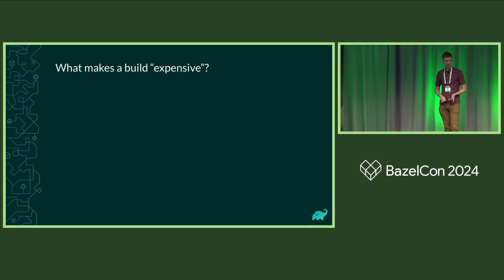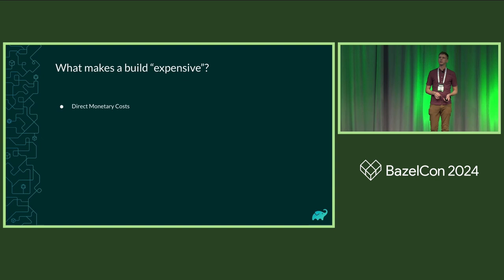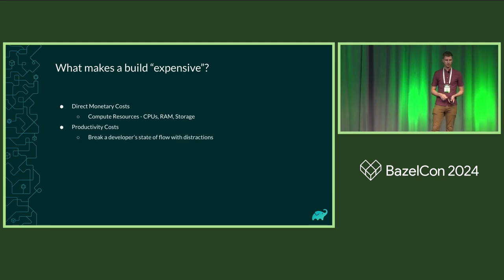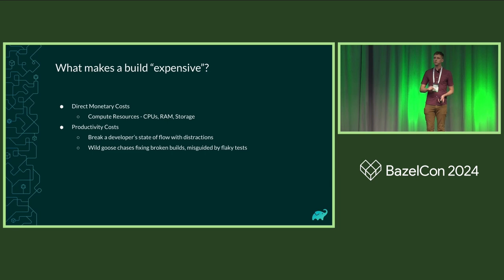Let's talk about what makes a build expensive. There are the direct monetary costs: compute resources, CPU, RAM, memory, your cloud compute. And then there are productivity costs — what happens when a build fails or is not reliable and you break your developer's state of flow with distractions or slow build times, or you send them on a wild goose chase fixing broken builds misguided by flaky tests.